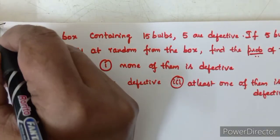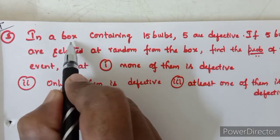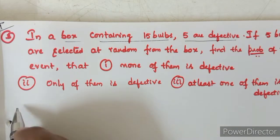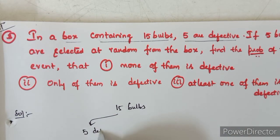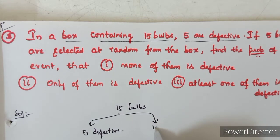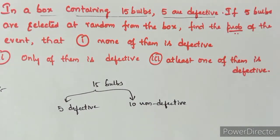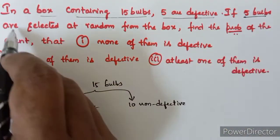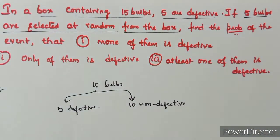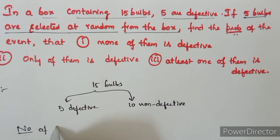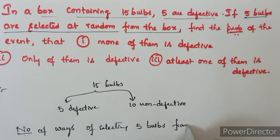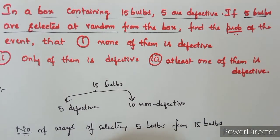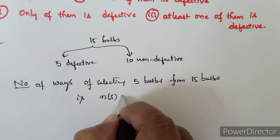Now we will see the 3rd question of Roman numeral 2. In a box containing 15 bulbs, 5 are defective, meaning the remaining 10 are non-defective (good bulbs). We are selecting 5 bulbs at random from the box. The number of ways of selecting 5 bulbs from 15 bulbs is N(S) = 15C5.